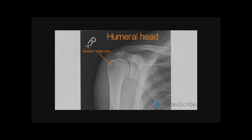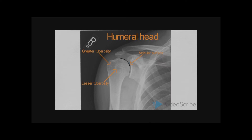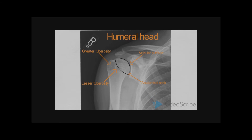Having assessed the articular surface of the humeral head, we need to further look at the glenohumeral joint space. This is the joint space identified between the glenoid cavity and the humeral articular surface. It is important to distinguish between fractures of the anatomical and surgical neck, as blood supply to the main head fragment may be disrupted after fractures to the anatomical neck, and avascular necrosis in such scenarios is more likely to occur.